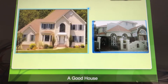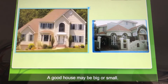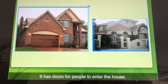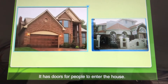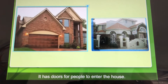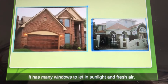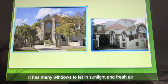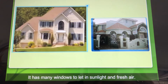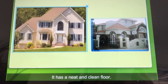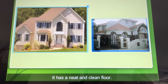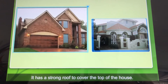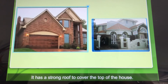A good house may be big or small. It has doors for people to enter the house. It has many windows to let in sunlight and fresh air. It has a neat and clean floor. It has a strong roof to cover the top of the house.